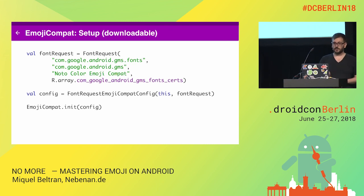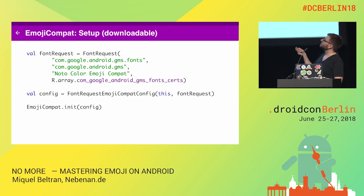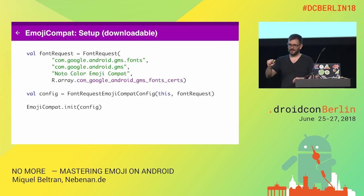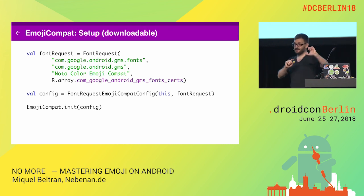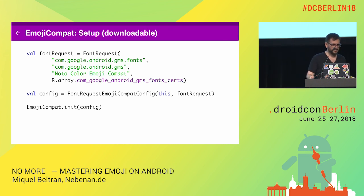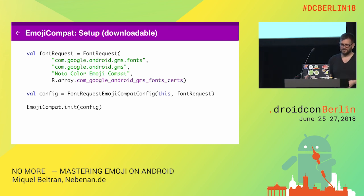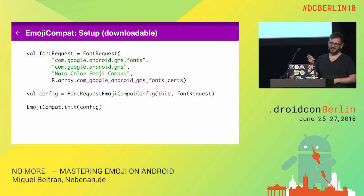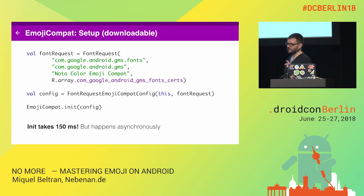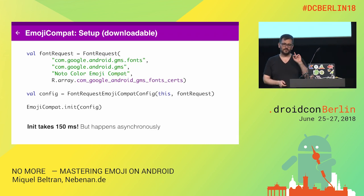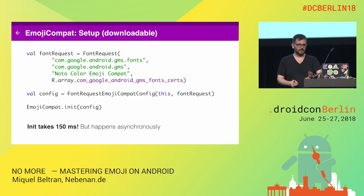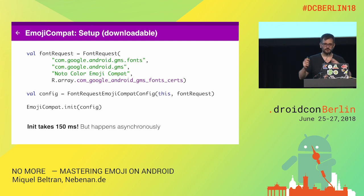The bundled version also adds seven megabytes, so you want to use the downloadable version. To set up the downloadable version: create a FontRequest. You need to pass certificates, which you may not have in your project. There's a trick: add an XML custom font, which generates the certificates in your project, then delete the custom font — and you have the certificates. The documentation doesn't explain that, so you get that tip for free. Create a FontRequest and call init(). But be careful — this init() method takes 150 milliseconds to load. It happens asynchronously, meaning if you use EmojiCompat immediately, like in a very small app that loads and displays emoji instantly, it's going to crash.